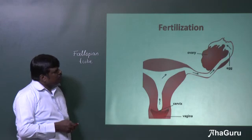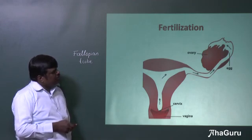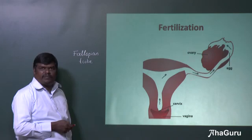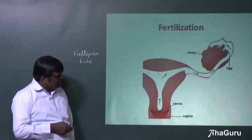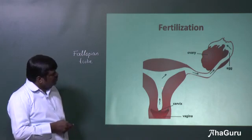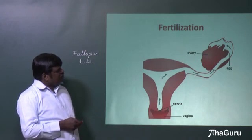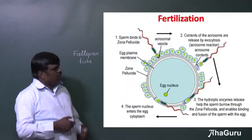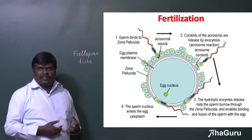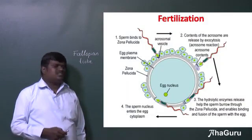The ovum is released from the ovary and will be somewhere in the fallopian tube. The sperms enter through the vagina, move inside the cervix, cross the uterus, and the fertilization process takes place there. We're now going to learn about how this fertilization process occurs.